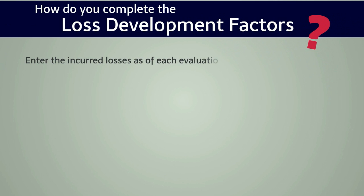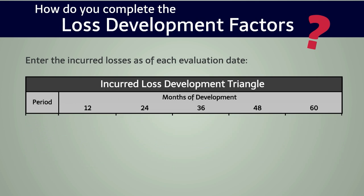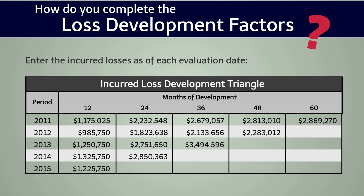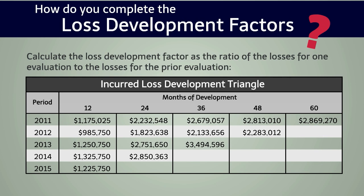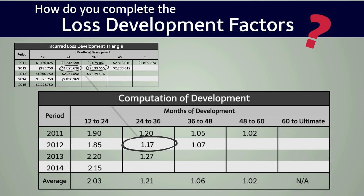So let's build a loss development triangle. Enter the incurred losses as of each evaluation date. We start our triangle by considering the different evaluation dates and filling each cell with the appropriate incurred loss evaluation as of that time period for that policy period. Once we have the triangle filled with loss amounts for each evaluation date and policy period, we can do some simple arithmetic. Let's compute the 24 to 36 month development factor for the 2012 policy period: we divide $2,133,656 by $1,823,638, which results in a factor of 1.17, recorded in the 24 to 36 month cell for the 2012 policy period.